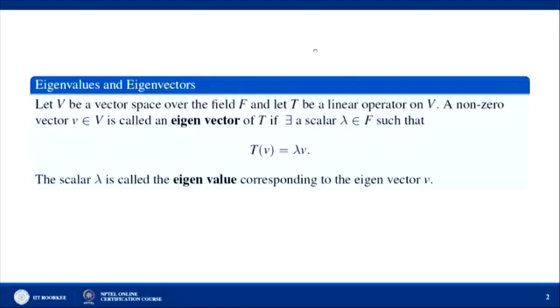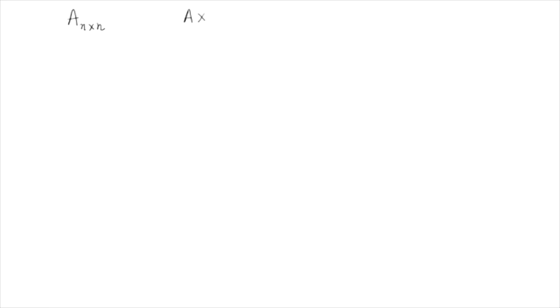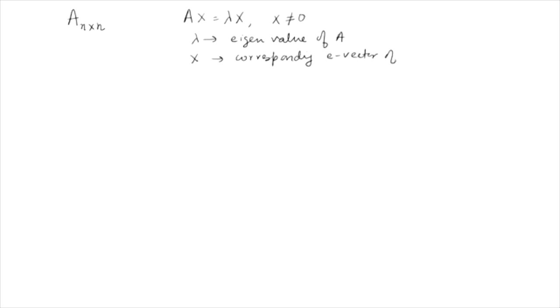In the previous definition we replaced T by matrix A, and x is in V, λ is a scalar in the field. So, if A is a matrix of order n×n and Ax = λx where x ≠ 0, then λ is called the eigenvalue of A and x is called the corresponding eigenvector of A, or eigenvector corresponding to λ.